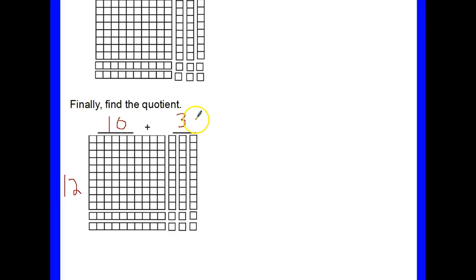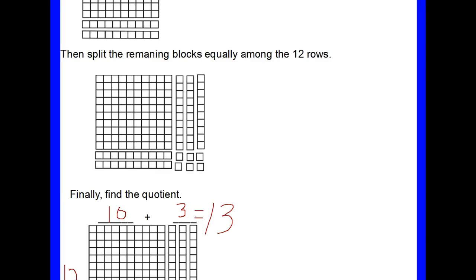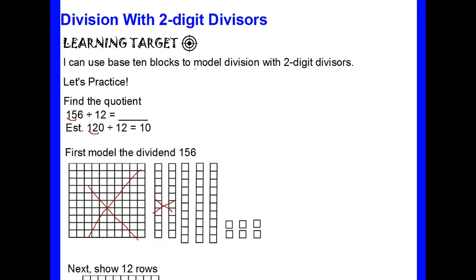Now, when I add this together, that's going to give me 13, which also is my quotient. So, 156 divided by 12 is 13.